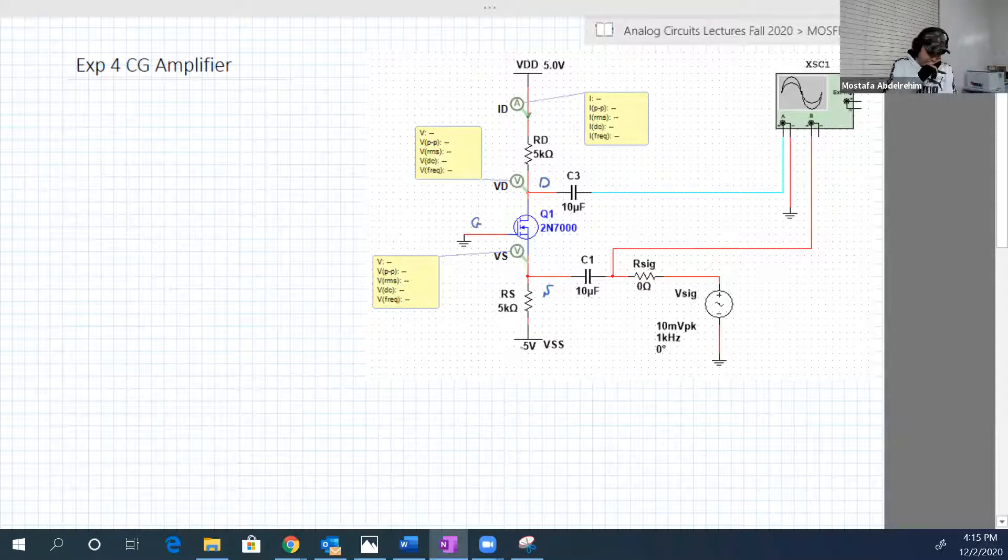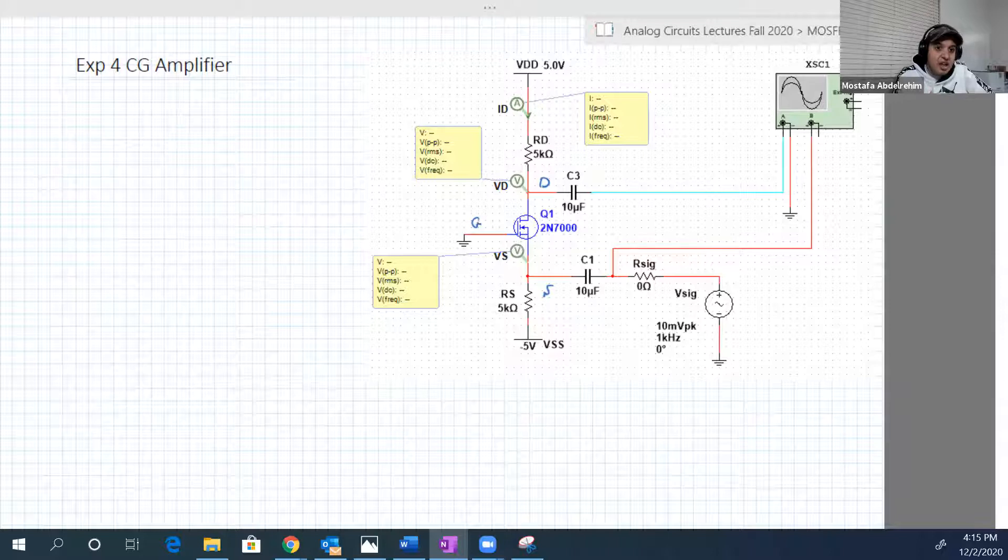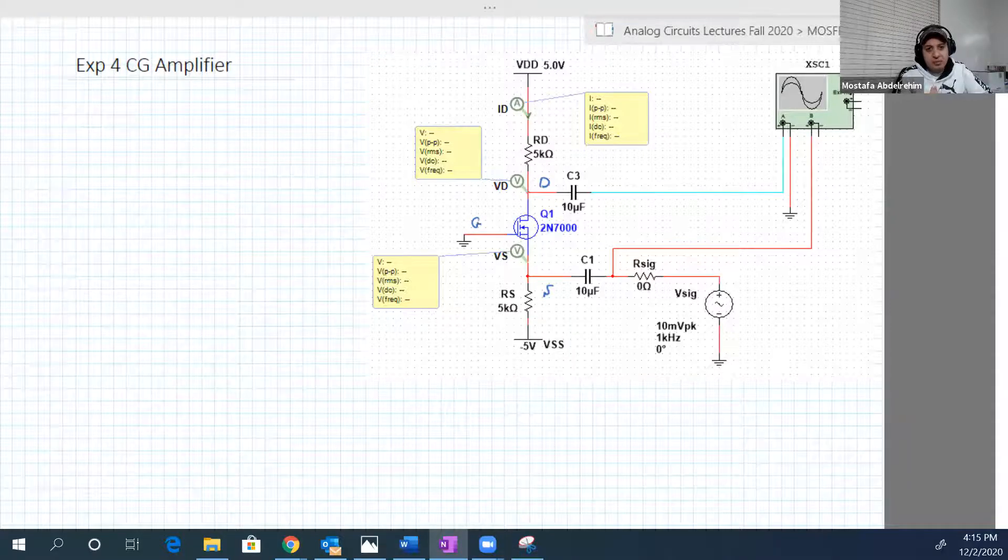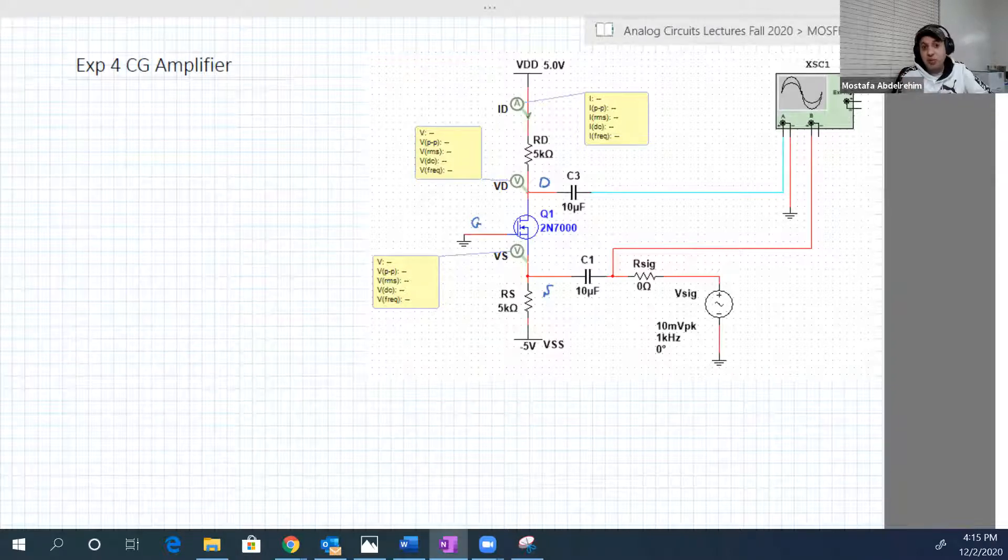Again, you know, analyze the circuit first in DC and AC so we get numbers. These are analysis and just compare the numbers that we get from the analysis to the numbers that we get from the measurement. We start by the DC analysis.